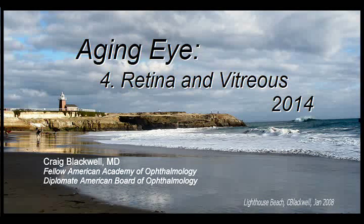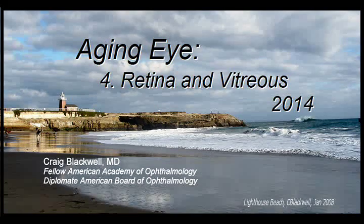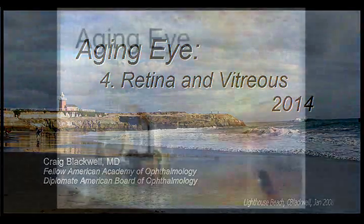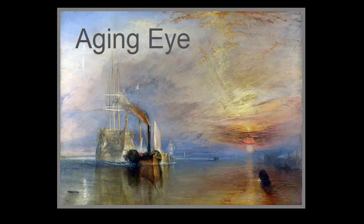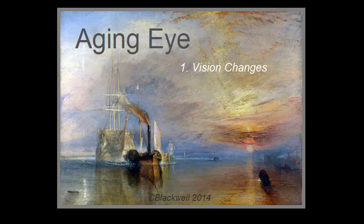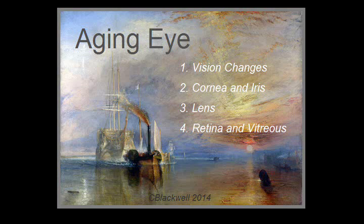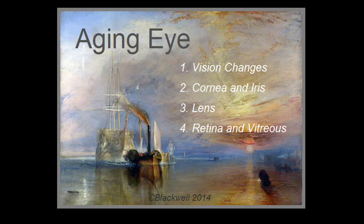This video is about the retina and vitreous, number four in our series about the aging eye. In the first video we looked in some detail at how essentially all dimensions of our vision change with time. In videos two and three we looked at structural changes in the front of the eye like cataract. In this video we will look at structural changes in the back of the eye like macular degeneration.